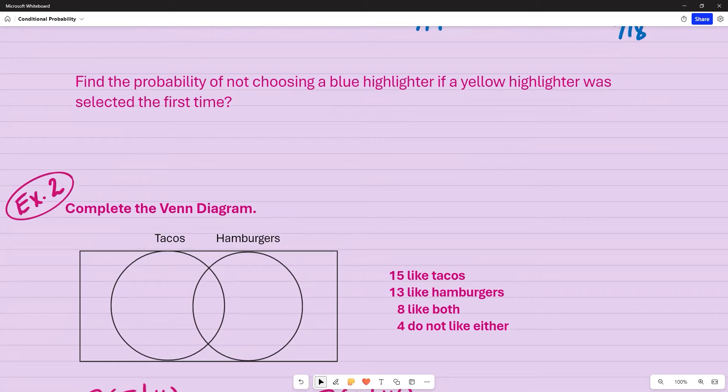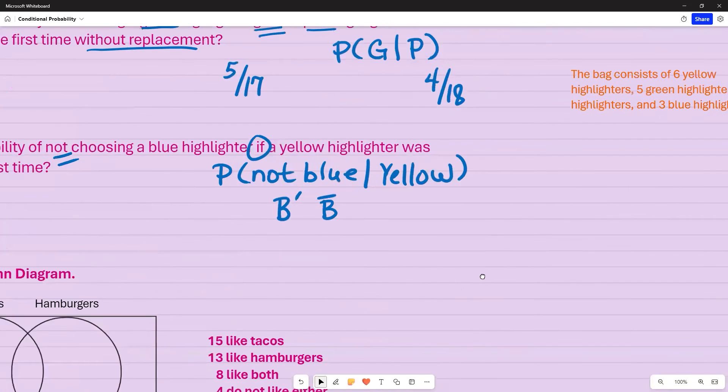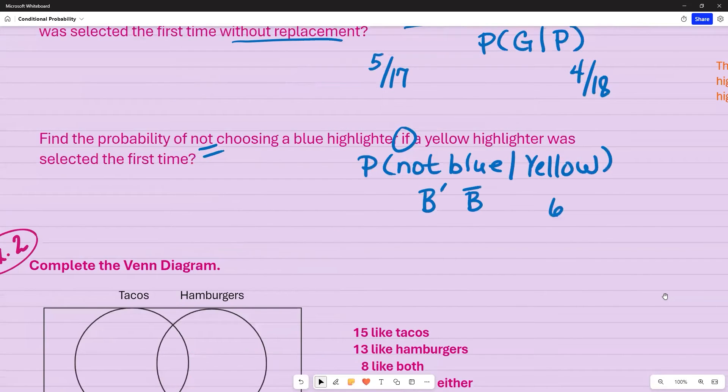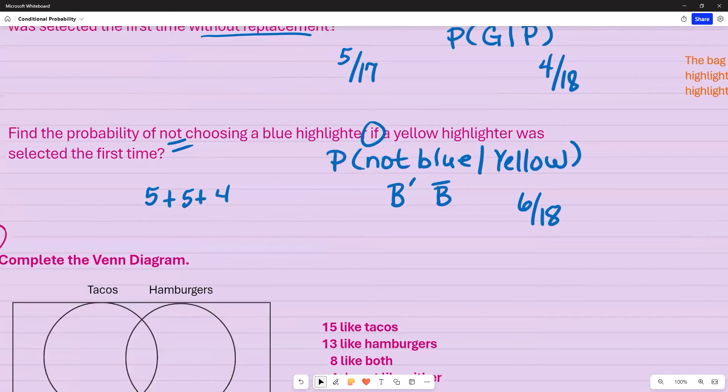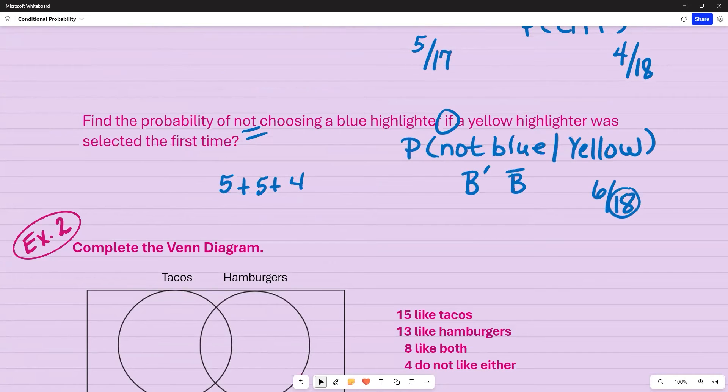Going on to the next one. Find the probability of not choosing a blue highlighter if a yellow highlighter was selected the first time. You can use words or you can use symbols. So not blue if, this time is used instead of the word given. But it means the same thing in terms of notation. And then yellow. I'm going to see how many yellow I had. I have six yellow to begin with. So six out of 18. However, I'm trying to figure out what's not blue. So I'm going to count everything except blue, including that yellow. However, since I've already taken out one of my yellows, I no longer have six, I have five. So I have five yellow, I have five green, and I have four pink because this says not blue. So I can choose anything else except blue. I no longer have 18 because I already took out a yellow. So I have 17. So when I combine that, my answer would be 14 out of 17.